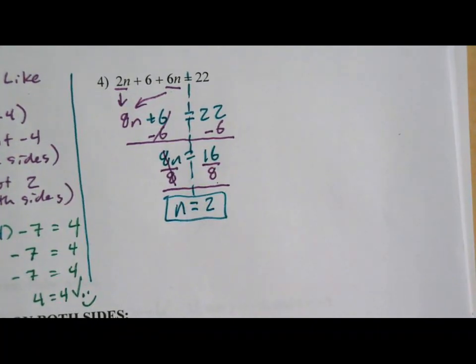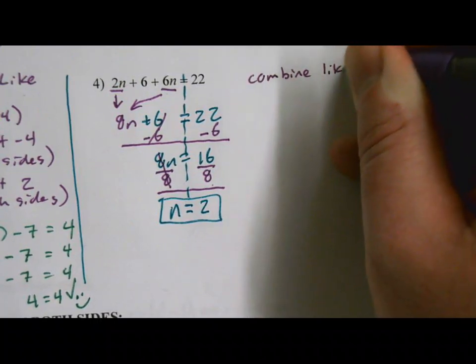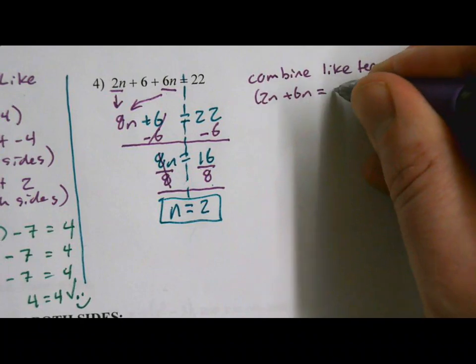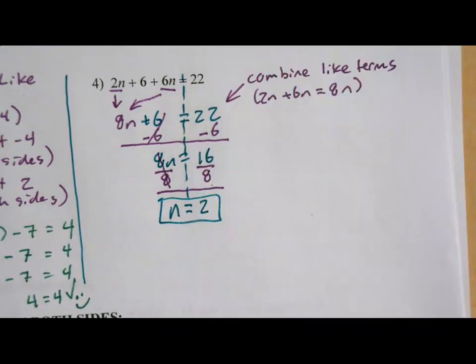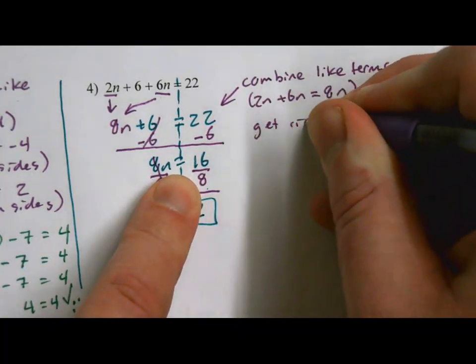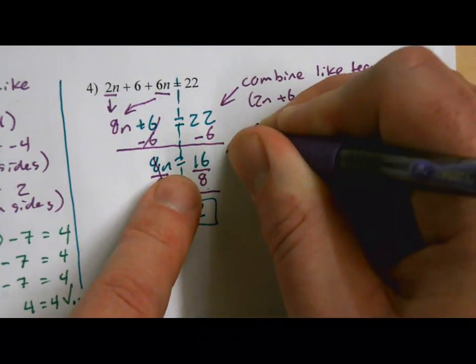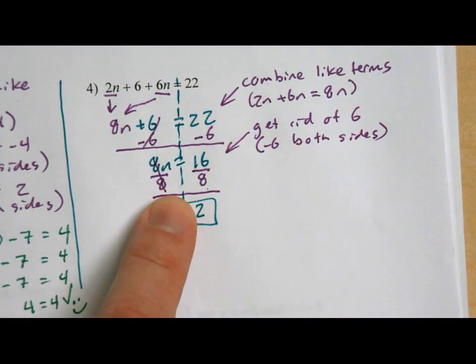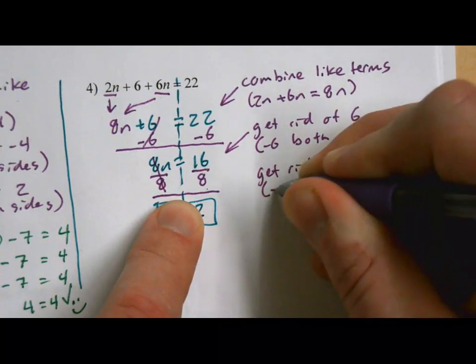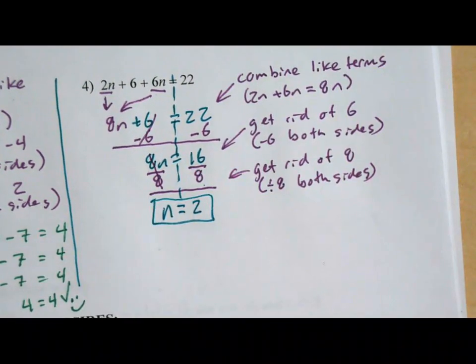Before we do, let's go ahead and annotate what we do in this problem. We started by combining like terms. And when we did that, we had a 2n and a 6n that we combined together to give us 8n. That got us to that step there. From there, we had an 8n and a plus 6. We got rid of the plus 6. We did that by doing minus 6 on both sides. That got rid of the 6 and got us to here. What did we do here? We divided by 8 on both sides. That was to get rid of the 8. So we divided by 8 on both sides. And that got us to our final solution there.